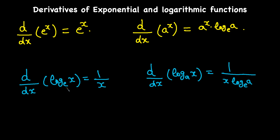For logarithms: the derivative of log base e of x is just 1 over x, times the derivative of x, which is one. And the derivative of log with a base other than e — say base a — is 1 over x times log base e of a, times the derivative of the inner function.